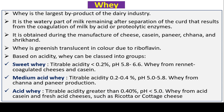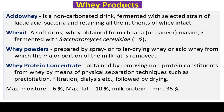Acid whey has a pH below 5.0 and is produced by acid fermentation, retaining all the nutrients of whey intact. Whey wheat is a soft drink — whey obtained from chana or paneer making is fermented with Saccharomyces cerevisiae at 1%, and that is known as whey wheat.